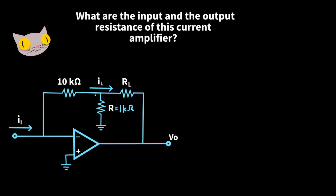Next, let's find the input and output resistance of the current amplifier. For the input resistance R_I, that equals the input voltage over the input current. For an ideal op amp, the voltage of the inverting terminal equals the voltage of the non-inverting terminal, and since we have a virtual ground, our input voltage is 0 volts. So R_I equals 0 volts over I_I, which gives us a resistance of 0.